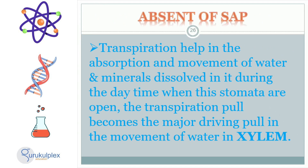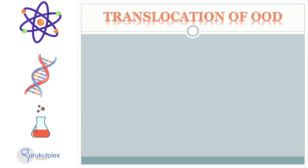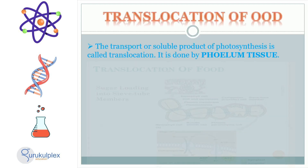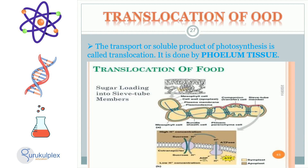Transpiration helps in the absorption and movement of water and minerals dissolved in it. During the daytime when stomata are open, the capillary action of transpiration is the major driving force in the movement of water in the plant. The process of translocation occurs when products created by photosynthesis, such as sugars and other materials, are transported through the phloem tissue within the plant. The phloem tissue is the collection of cells that make up the pathways in which sugars and nutrients are transported throughout the plant. This process is vital for the growth and development of plants, allowing the plant to access nutrients and energy from a variety of sources to aid in its growth.